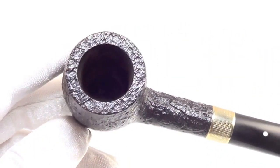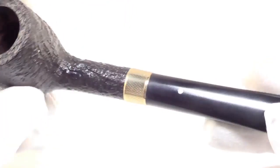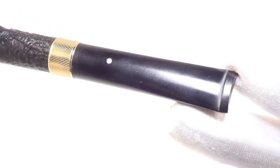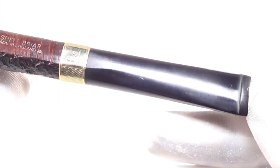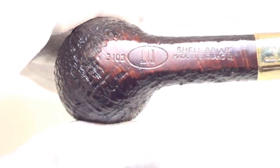The bowl is char-free and the bowl walls are nicely thick. The stem has no teeth marks on the top or the bottom. This piece shows very few signs of previous use.